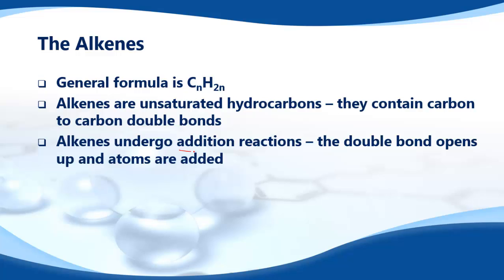Alkenes undergo addition reactions. The double bond opens up and atoms are added to the molecule. An example here we have ethene. We have a double bond here. This double bond can open up and we can add atoms to make different organic compounds. So we're going to look at the different reactions that the alkenes undergo.